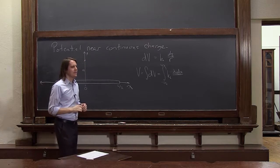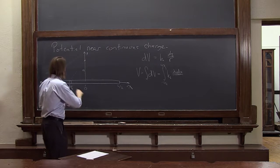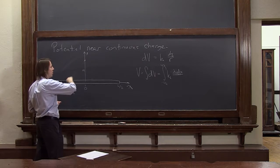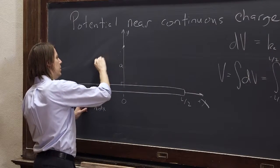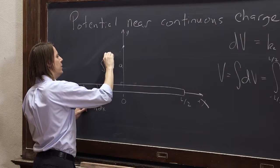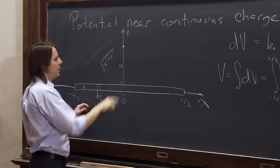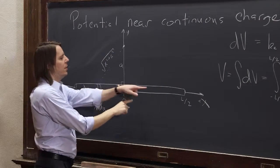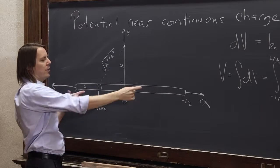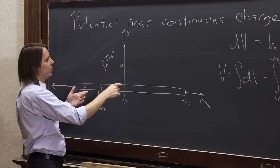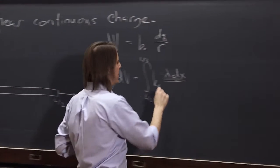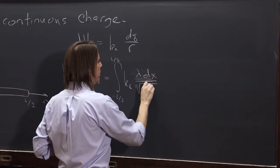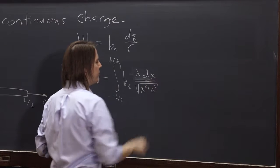Everything in the integral has to be expressed as a function of x. The distance r — we have a right triangle, so r equals the square root of x squared plus a squared. A is the height, x is where you are along the rod. We're lucky that when x is negative it's squared, so it works for both the positive and negative sides. So in the denominator we have the square root of x squared plus a squared.